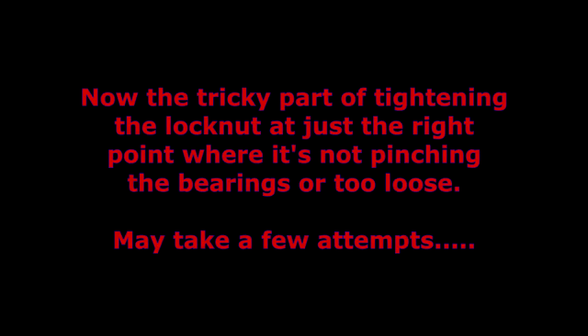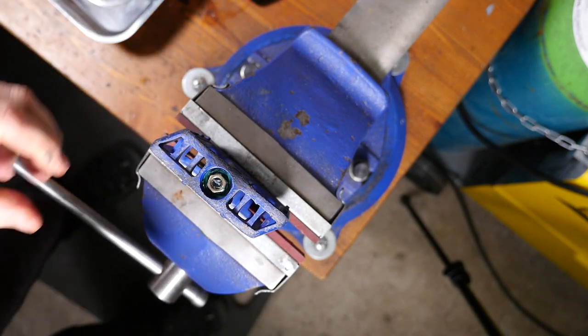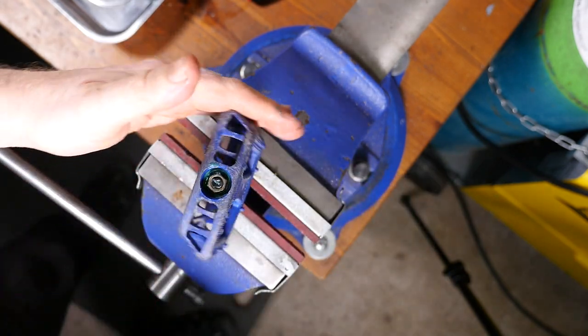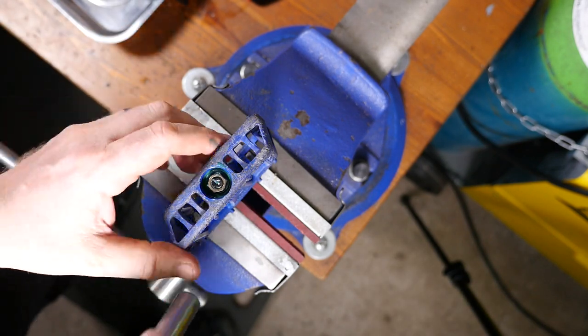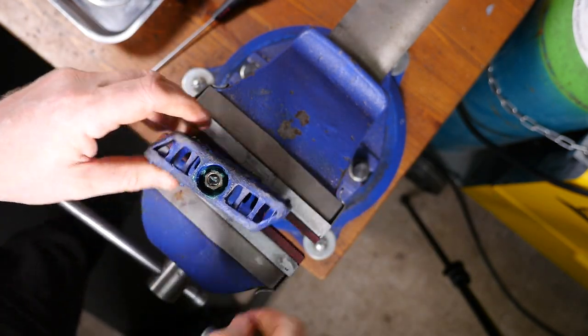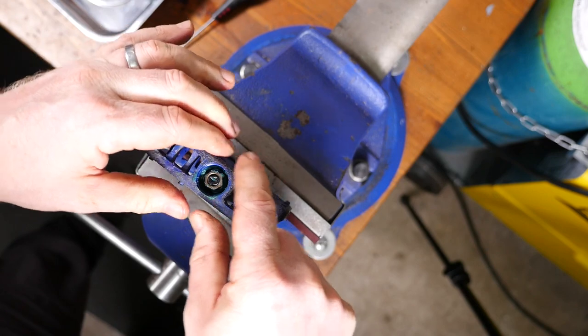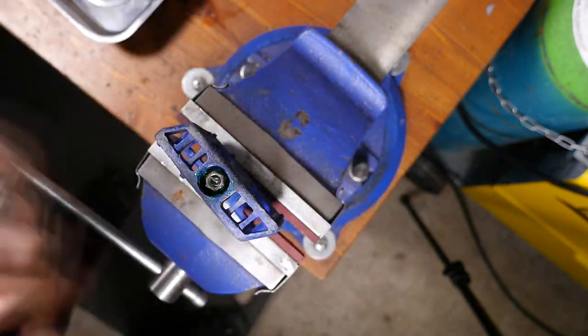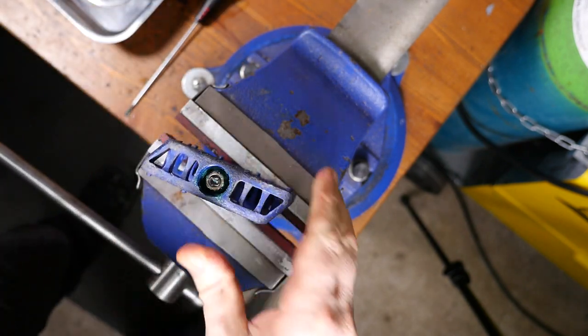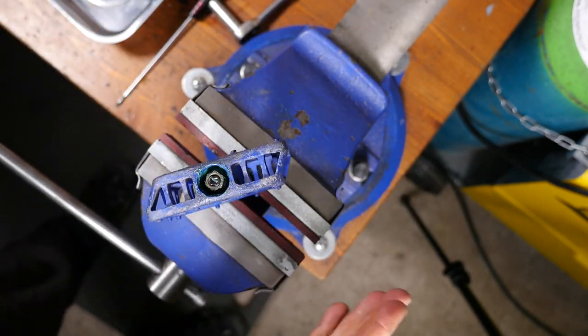Now the tricky part of tightening the lock nut at just the right point where it's not pinching the bearings or too loose. This may take a few attempts. So putting the flats of the axle into the bench vise. So I'll tighten it up to see what we get. Yep too tight, the cone is pinching the bearings. So undo it again and then undo that cone slightly. Tighten it back up. Now there's too much play. It's spinning but there's definitely pedal movement there. So we need to undo it again and just tighten the cone slightly with a flat blade screwdriver, and then re-tighten. Now that seems okay. Any movement? Nope. That's looking good.